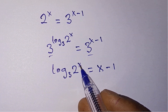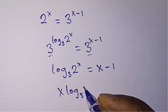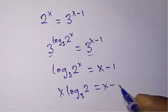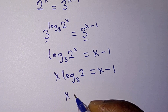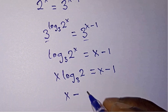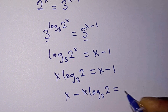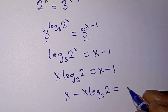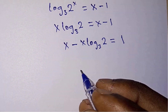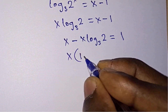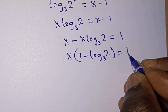From the properties of log, the power becomes the leading number, giving us x·log_3(2) equals x minus 1. Grouping like terms — moving x·log_3(2) and x together — we get x minus x·log_3(2) equals 1. We factor x out: x times (1 minus log base 3 of 2) equals 1.